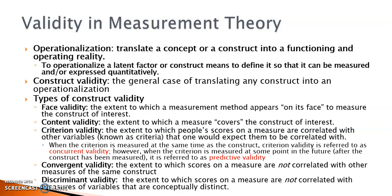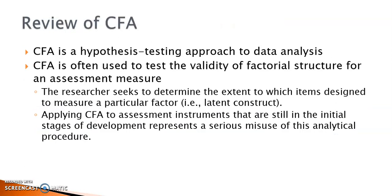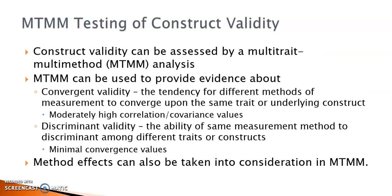In contrast, discriminant validity quantifies the extent to which scores on a measure are not correlated with measures of variables that are conceptually distinct. For example, students' scores on a measure of physical activeness should have little to do with their self-efficacy in mathematics. Low correlation between the two measures is evidence for discriminant validity. In academic research, confirmatory factor analysis is often applied to testing the validity of factorial structure for a measurement instrument. When an instrument is fully developed, researchers may use CFA to determine the extent to which items designed to measure a particular latent factor.